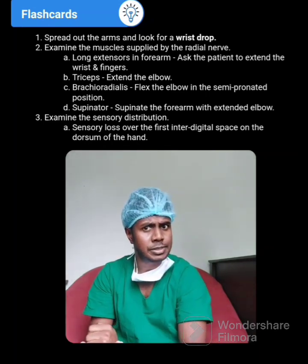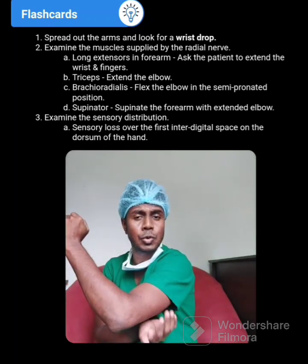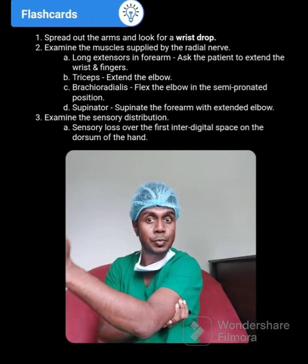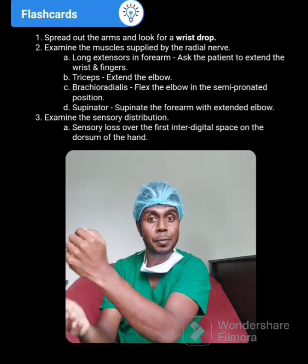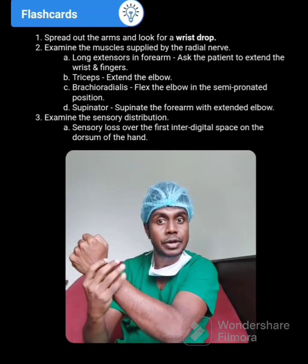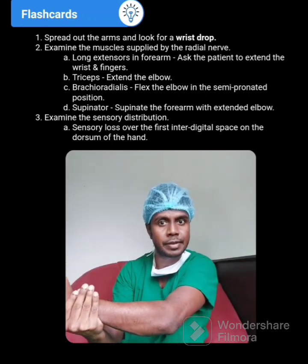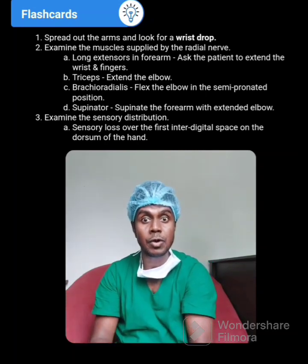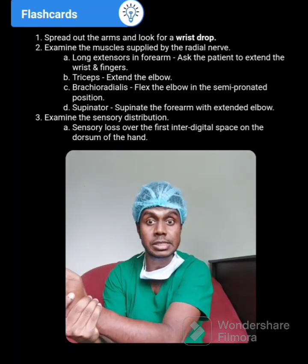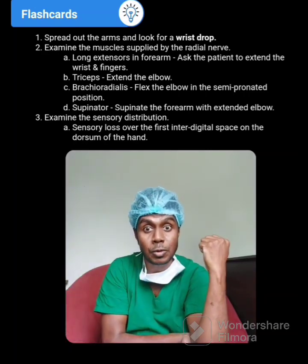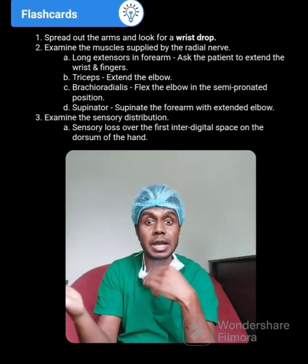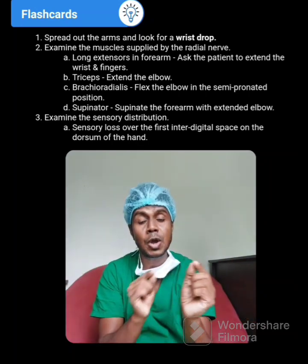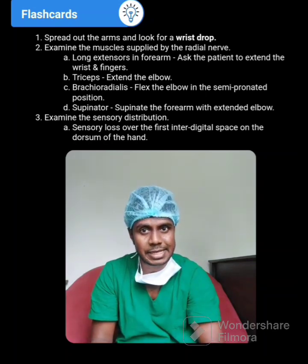If there is a radial nerve palsy, the tricep muscle is also going to be paralyzed. The tricep is the muscle that extends your elbow. Ask your patient to extend the elbow against resistance. Otherwise, your patient can extend from the elbow with the help of gravity. If there is resistance and tricep palsy, he won't be able to extend the elbow against the resistance.